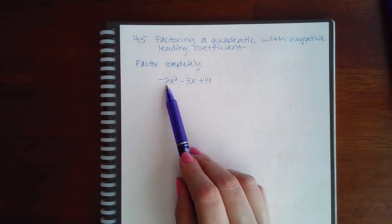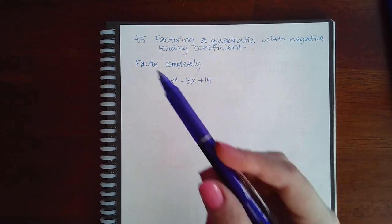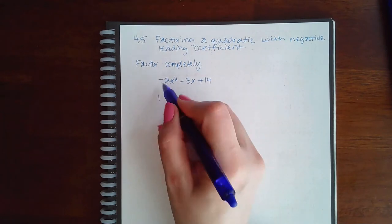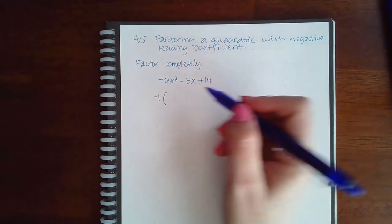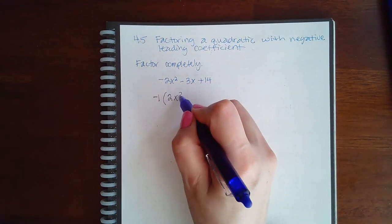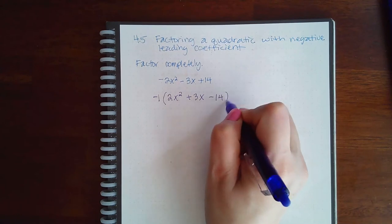So 2, 3, and 14 don't have anything in common other than 1. So my GCF is 1, but I am forced to factor out that negative. So I actually have to factor out a negative 1, leaving me with positive 2x squared, positive 3x, and negative 14.